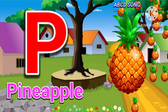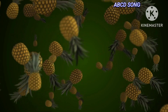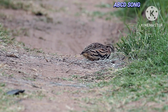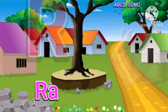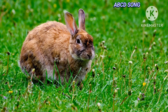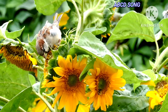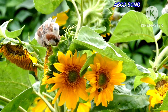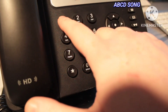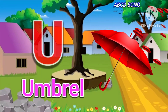P for pineapple, Q for quill, R for rabbit, S for sunflower, T for telephone, U for umbrella.